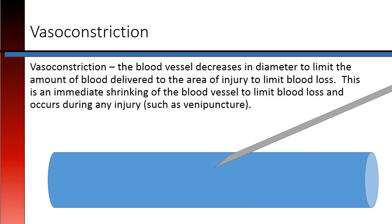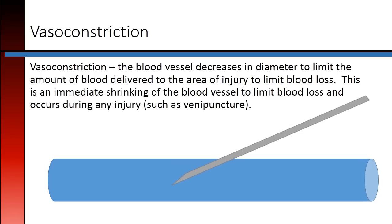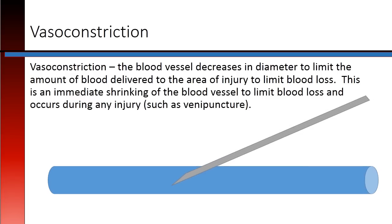Vasoconstriction. The blood vessel decreases in diameter to limit the amount of blood delivered to the area of injury. This is an immediate shrinking of the blood vessel to limit blood loss, and occurs during any injury, such as venipuncture.